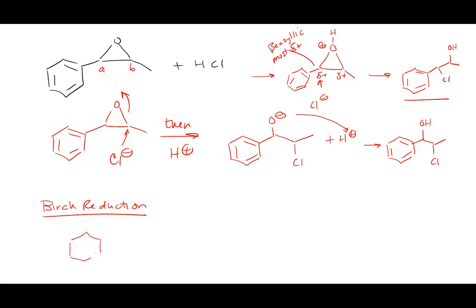I can take this benzene ring and convert it to a non-conjugated cyclohexadiene system. To destroy the aromaticity I'm going to have to use super harsh conditions: sodium metal and liquid ammonia. Where have we seen that before? It was when we took a triple bond and wanted to make the trans double bond — that reaction used sodium with liquid ammonia.